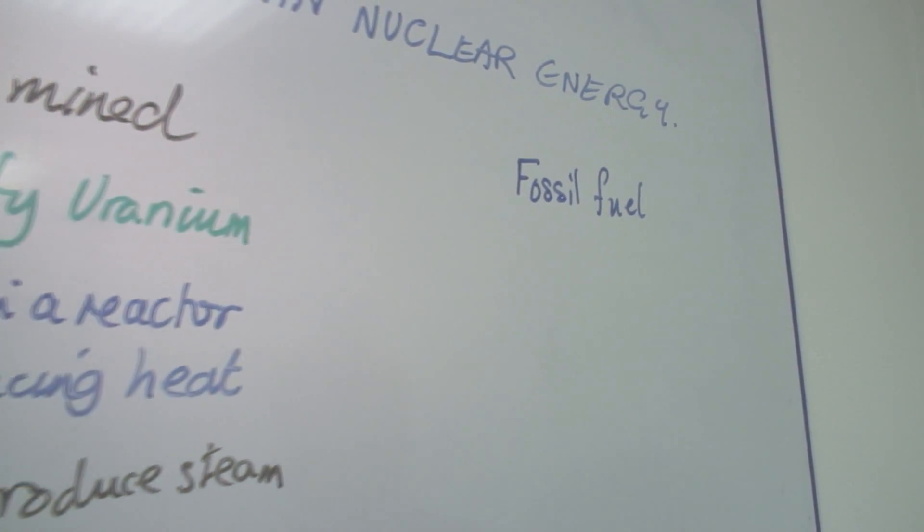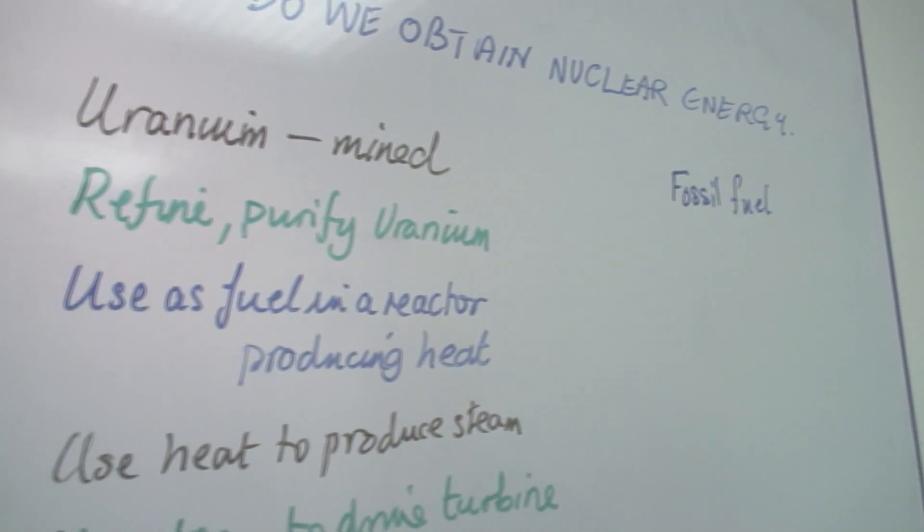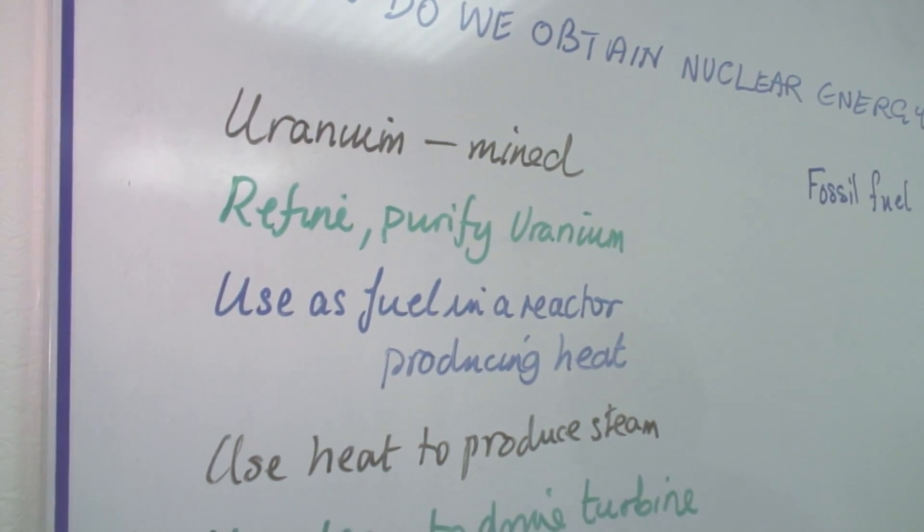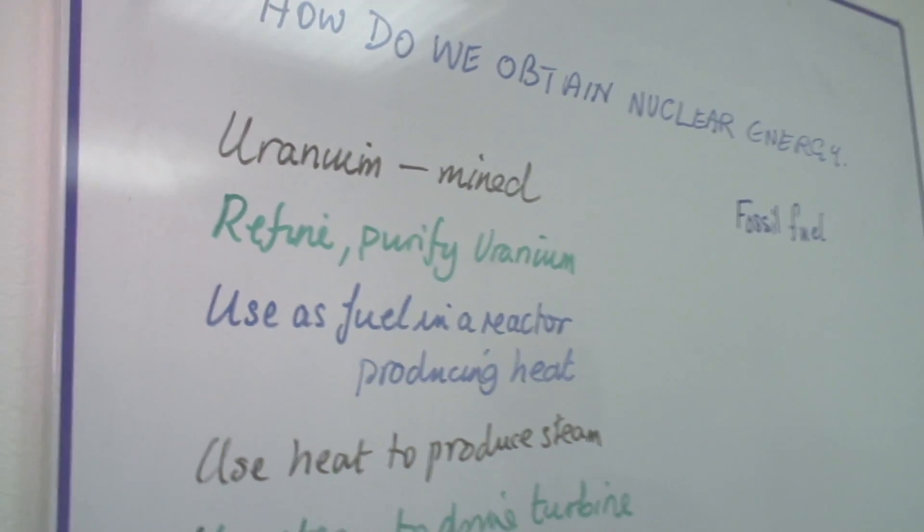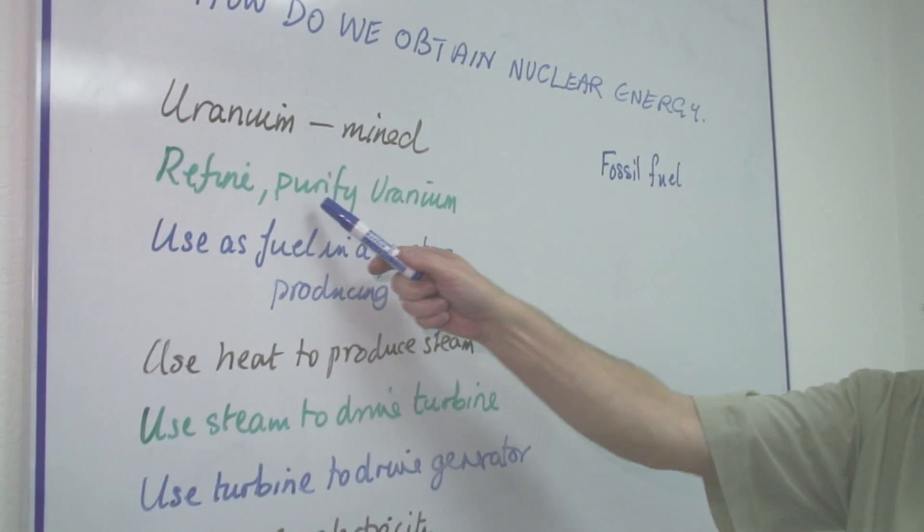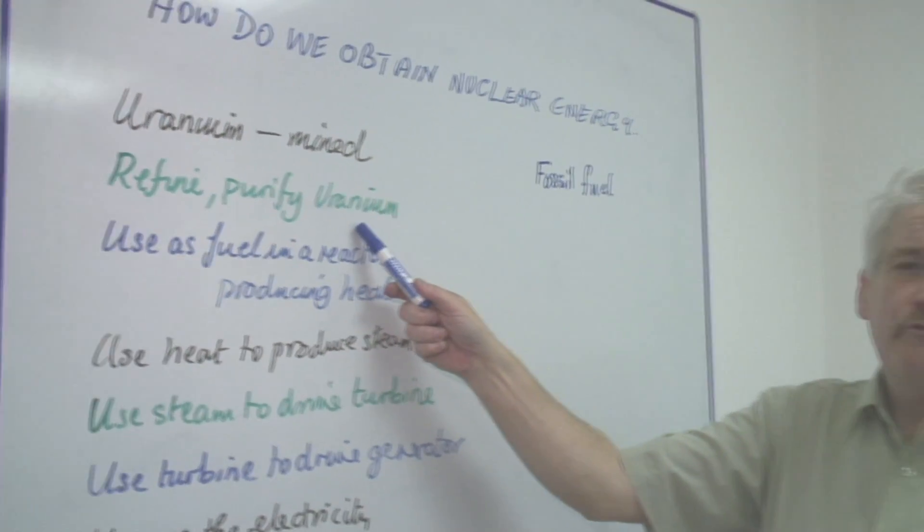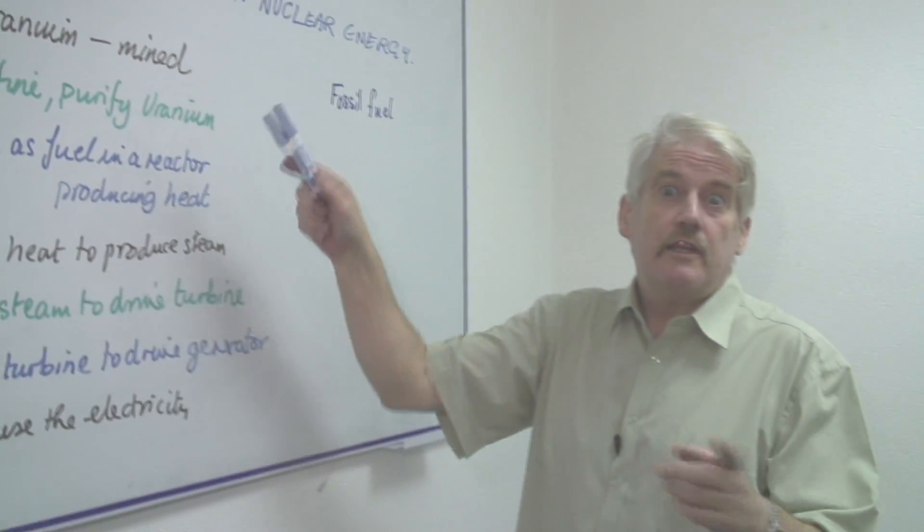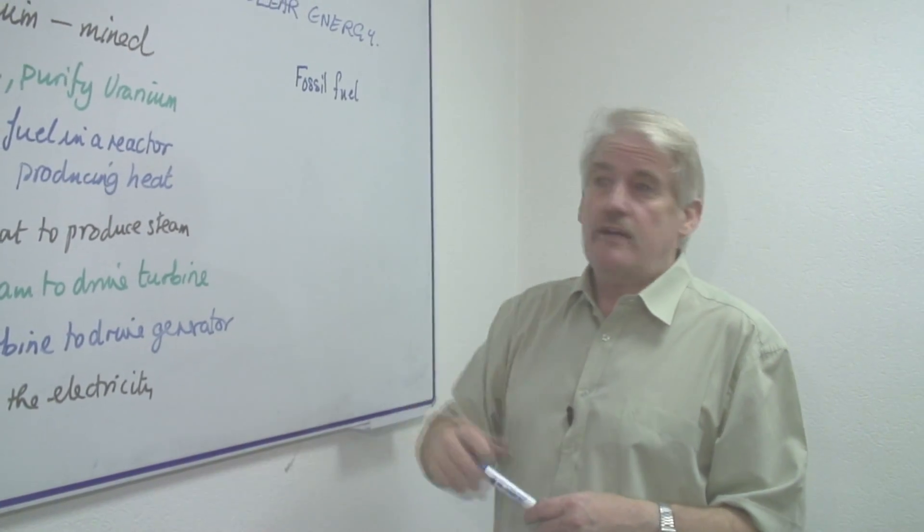So the first thing we have to do is mine the uranium. The uranium is dug out of the ground in large quantities and then it has to be refined to remove the uranium itself which is a very small proportion of the actual soil that comes out of the ground.